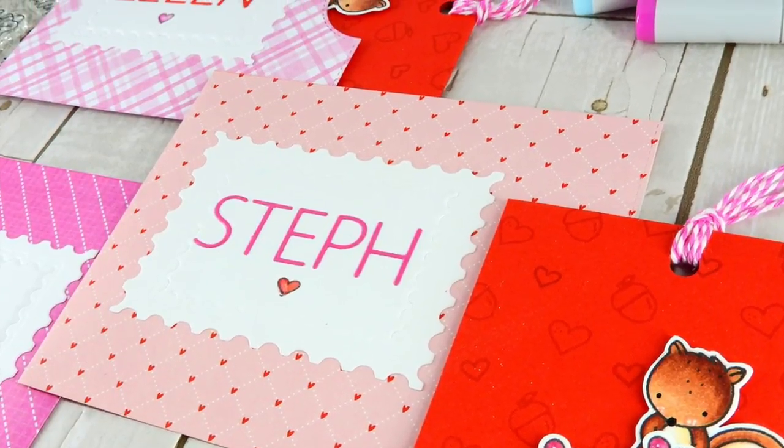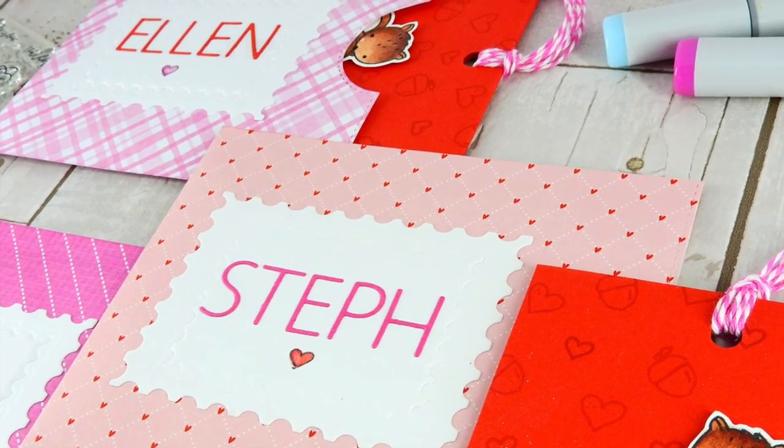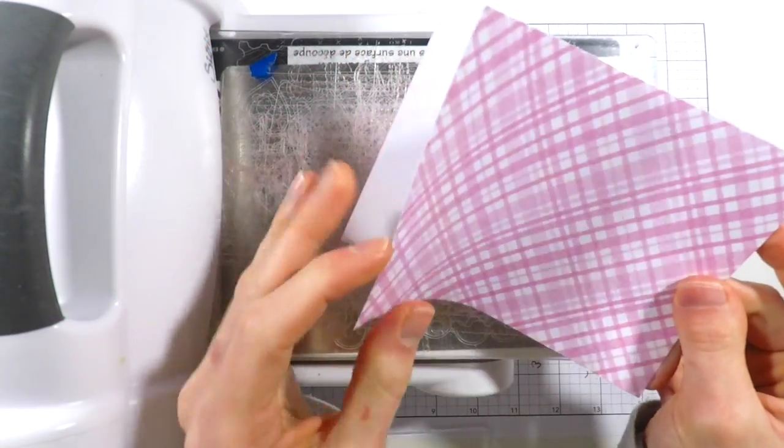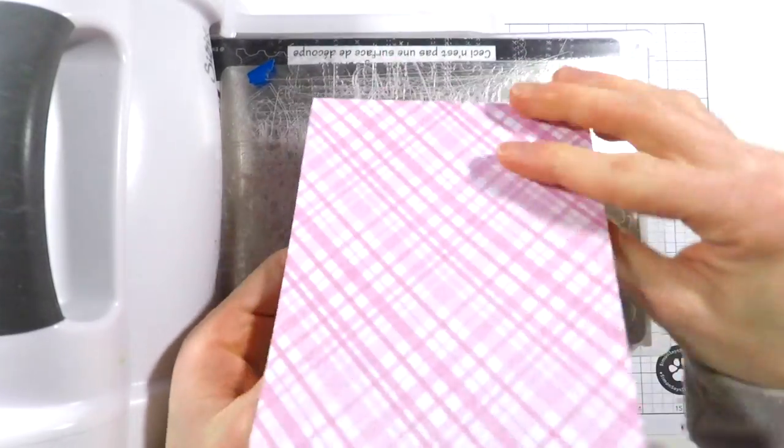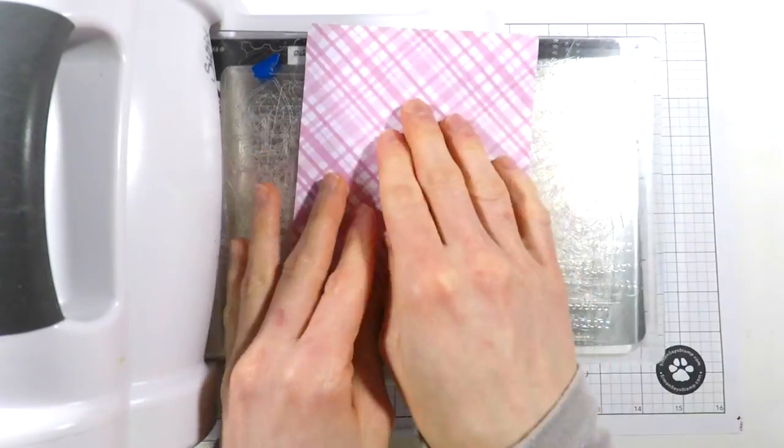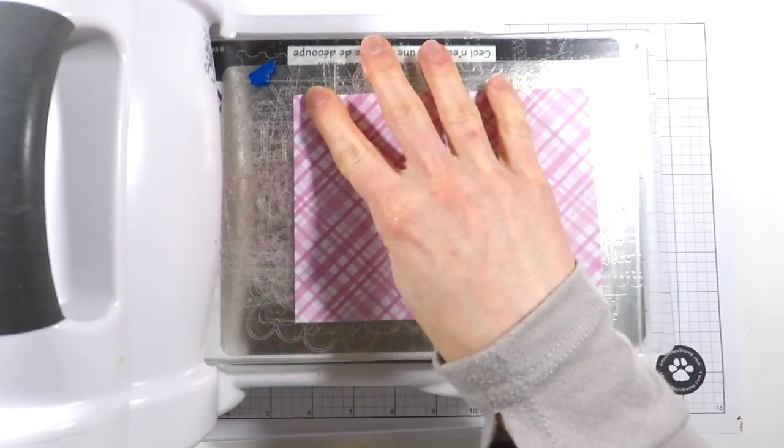I found the easiest way to create this envelope is by first starting off with a four and a quarter by five and a half inch card. This is basically a top folding A2 size card that I've cut from some pattern paper. I folded it and turned it into a card just like I would as if I was really going to turn this into a card.